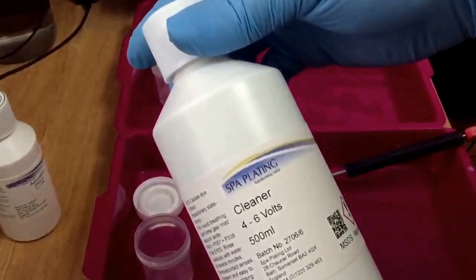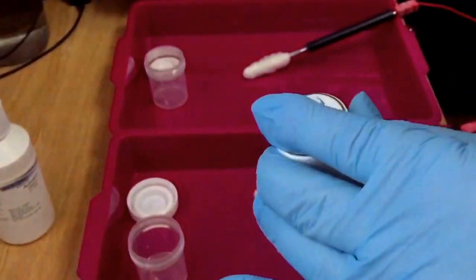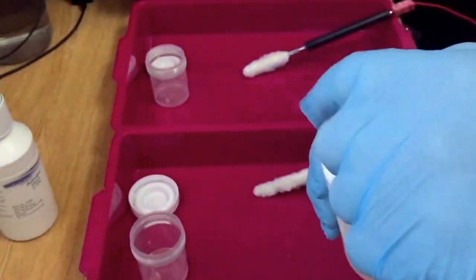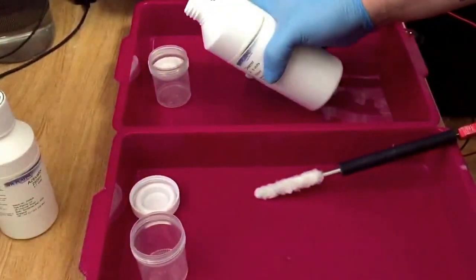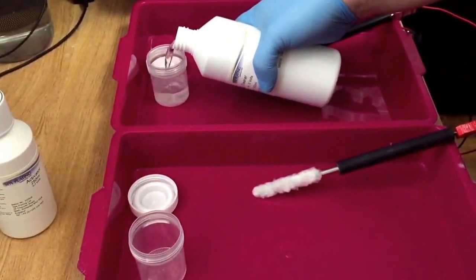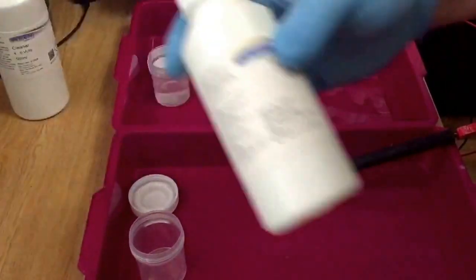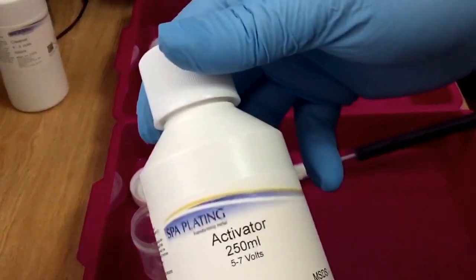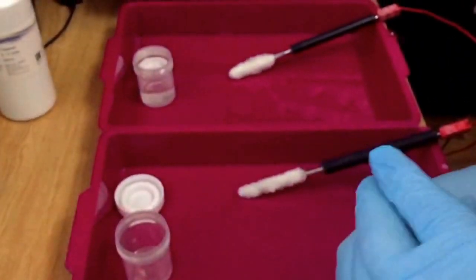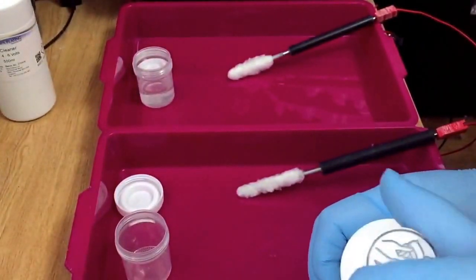We start with cleaner. You can see 4 to 6 volts, I put it at about 5 to 5.5 volts, something like this. Put a little bit in there. This one is activator, again about 5 volts, even at the same voltage, 5.5 volts for cleaning and activating.